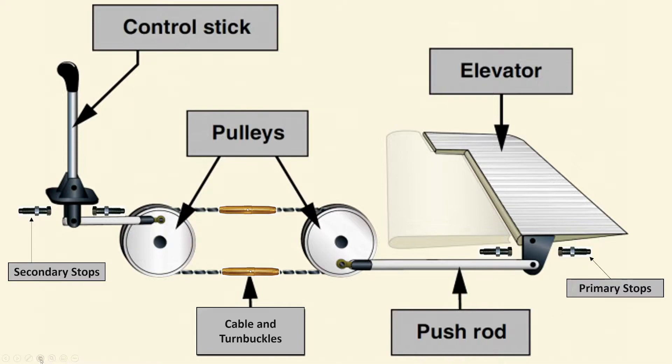We've got a little picture here of a simple flight control system. We can see we've got a control stick, and some of your aircraft may have a yoke versus a stick. Then we have an elevator as our primary flight control surface, and the components in between that take the inputs from the pilots and transition them to movement on the elevator.